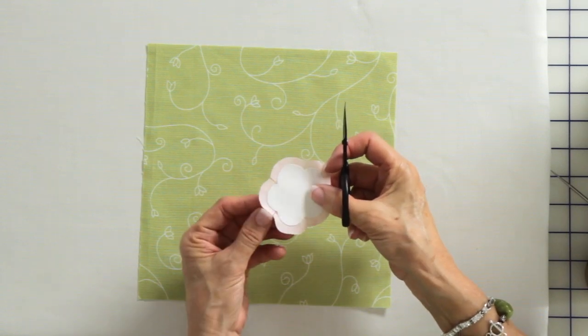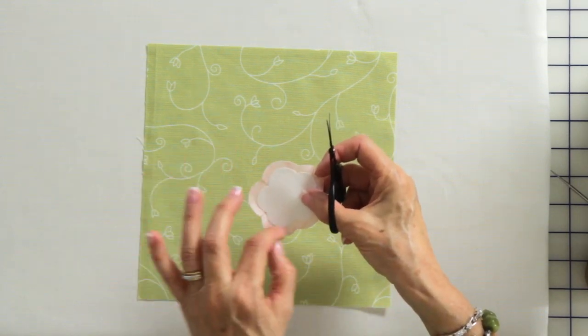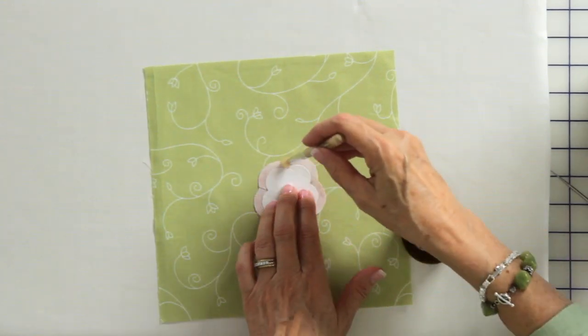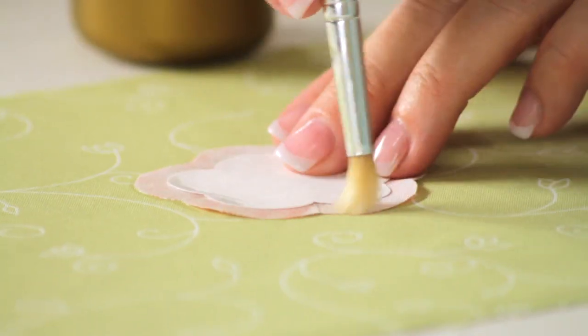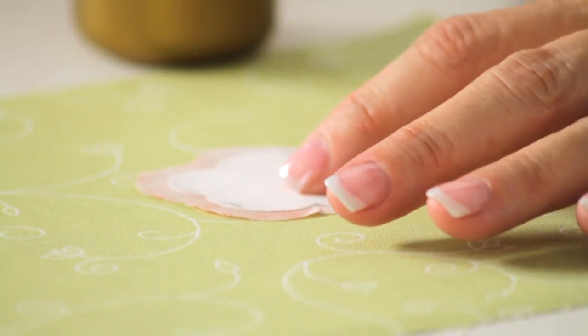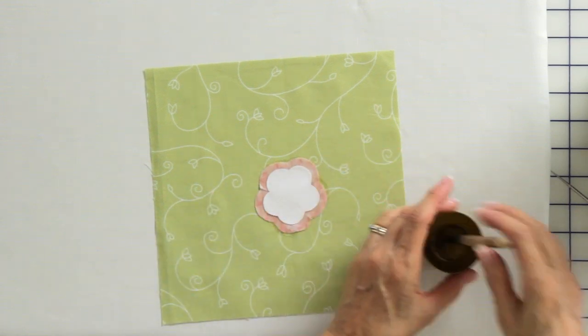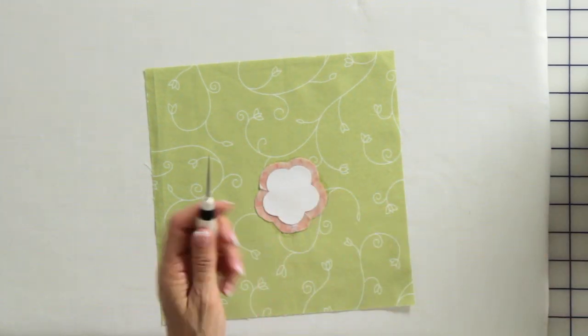I'm going to prep this the same way as all my other applique pieces with a little bit of spray starch painted on with a stencil brush. Then I use an awl so that I don't get burned and I just put my iron right here in between these two edges where I've got the snip.